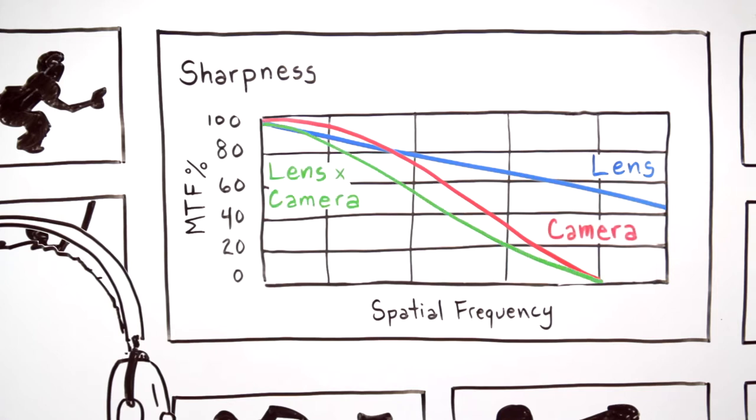The overall MTF is the multiplication of the two. Perceived picture sharpness is heavily influenced by the height of the composite MTF curve in the central frequency region.